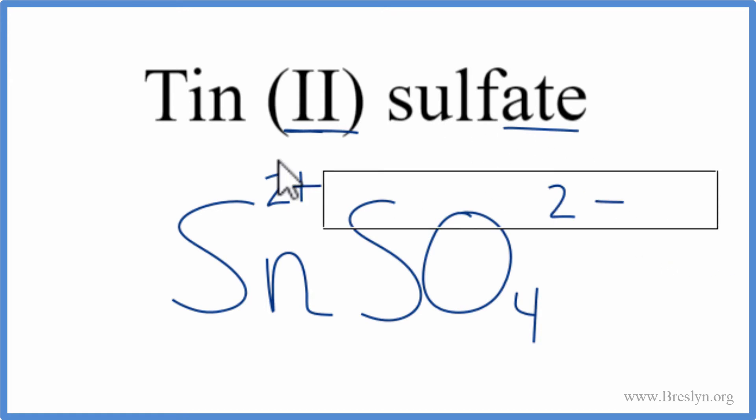Let's clean it up a little bit, and that's it. The formula for tin(II) sulfate: SnSO4.